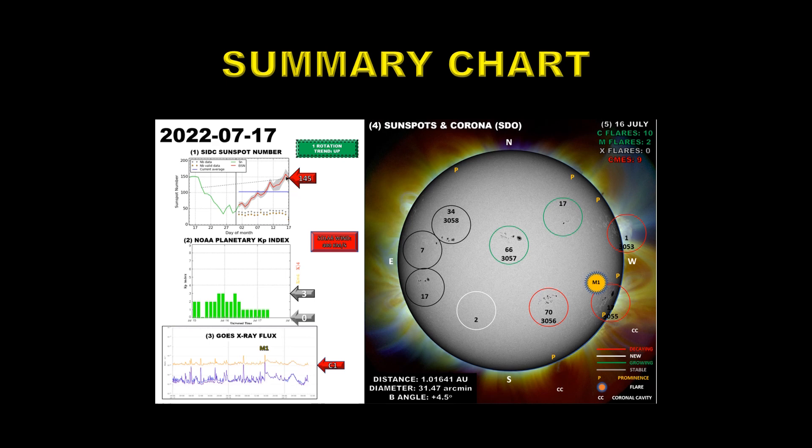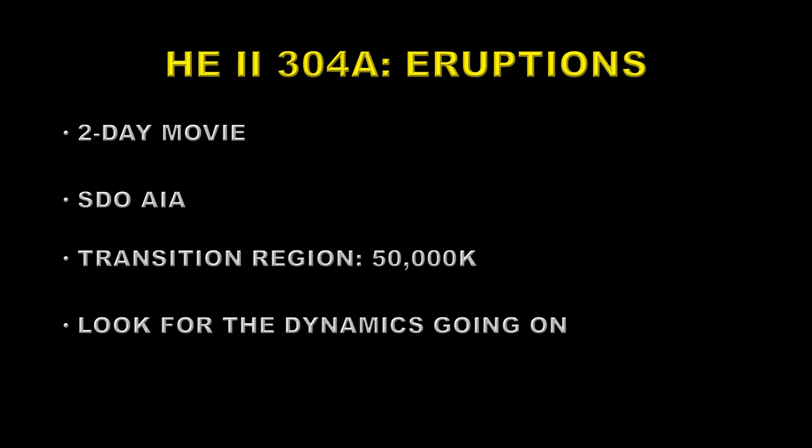Yesterday we had 10 C flares, most of which are very small, two M flares, no X flares, and nine CMEs. Well let's first take a look at some eruptions seen in the helium-2304 channel. It's a two-day movie from the SDO AIA instrument. The helium-2 line is from the transition region at about 50,000 degrees kelvin.